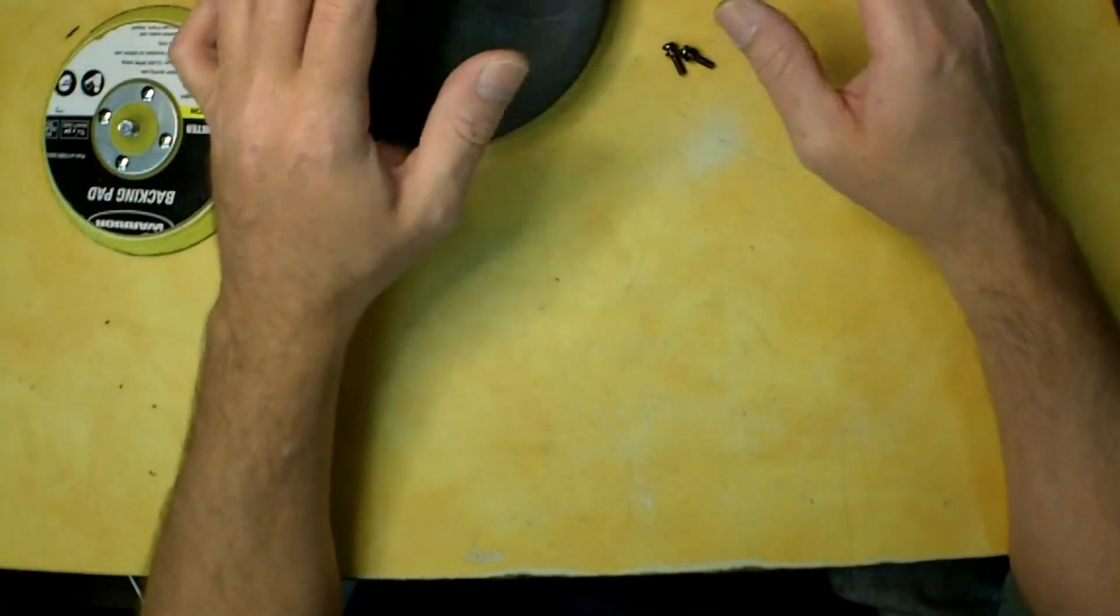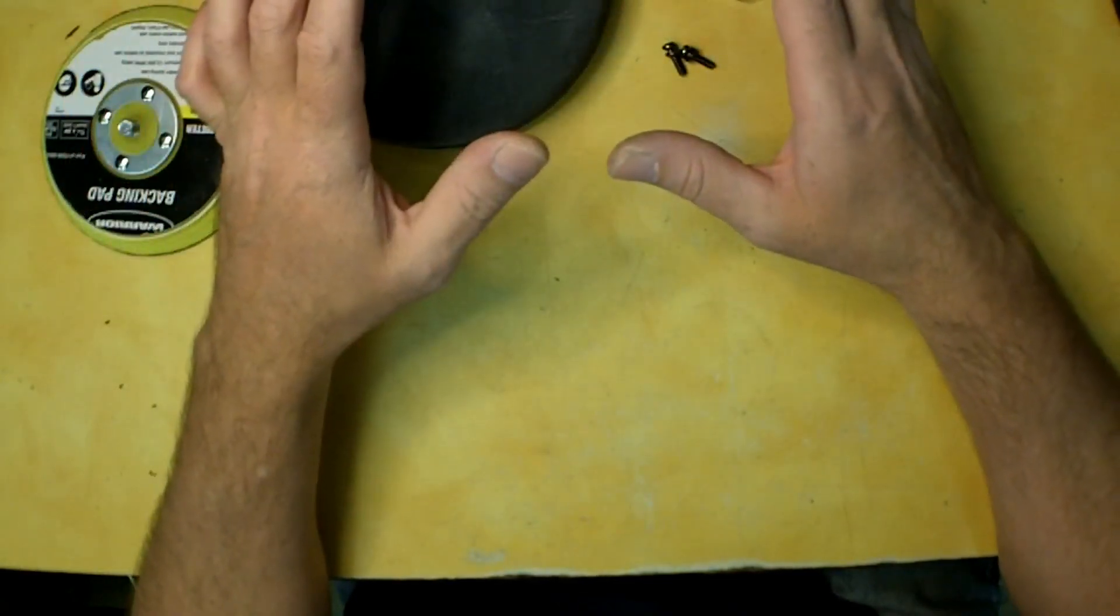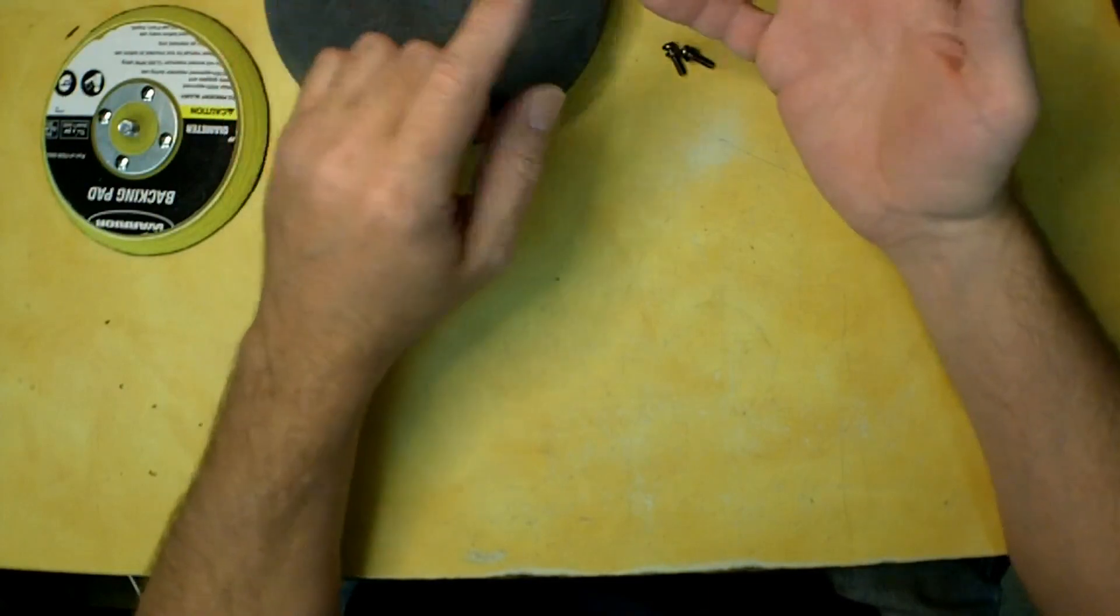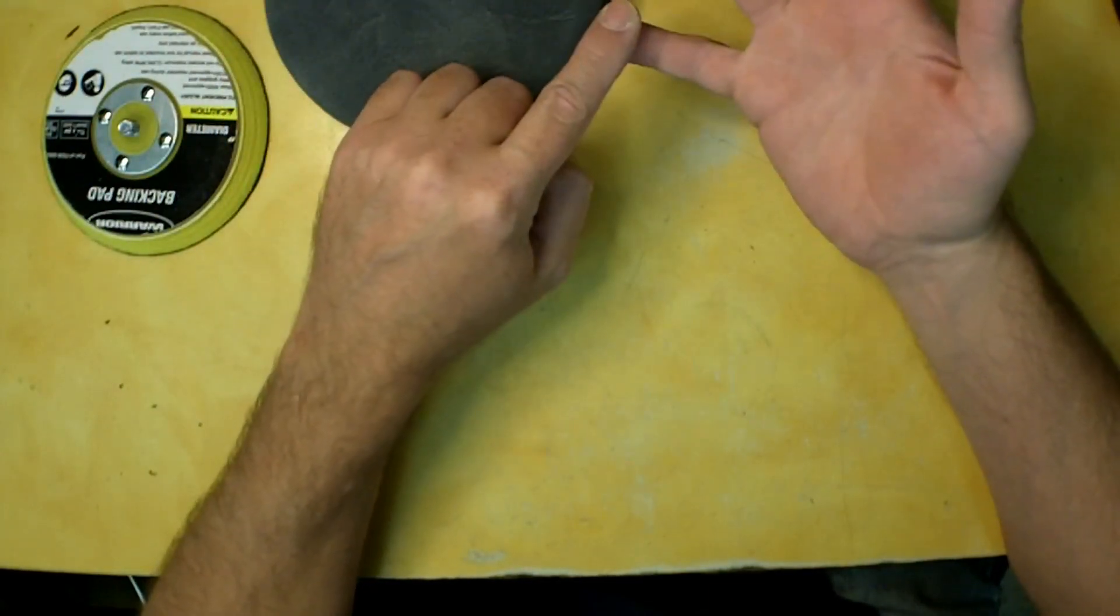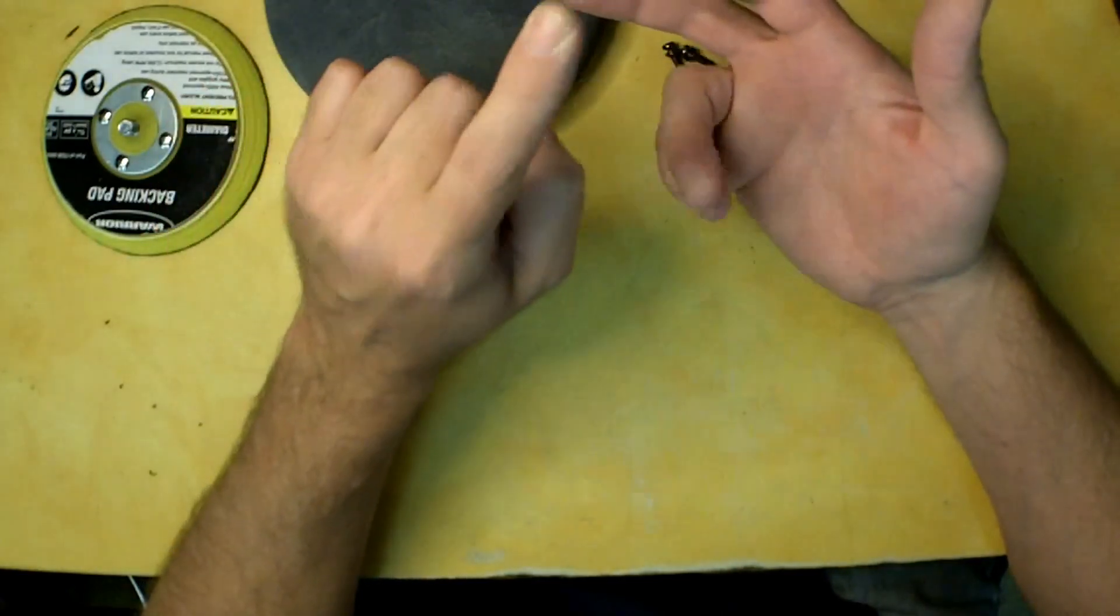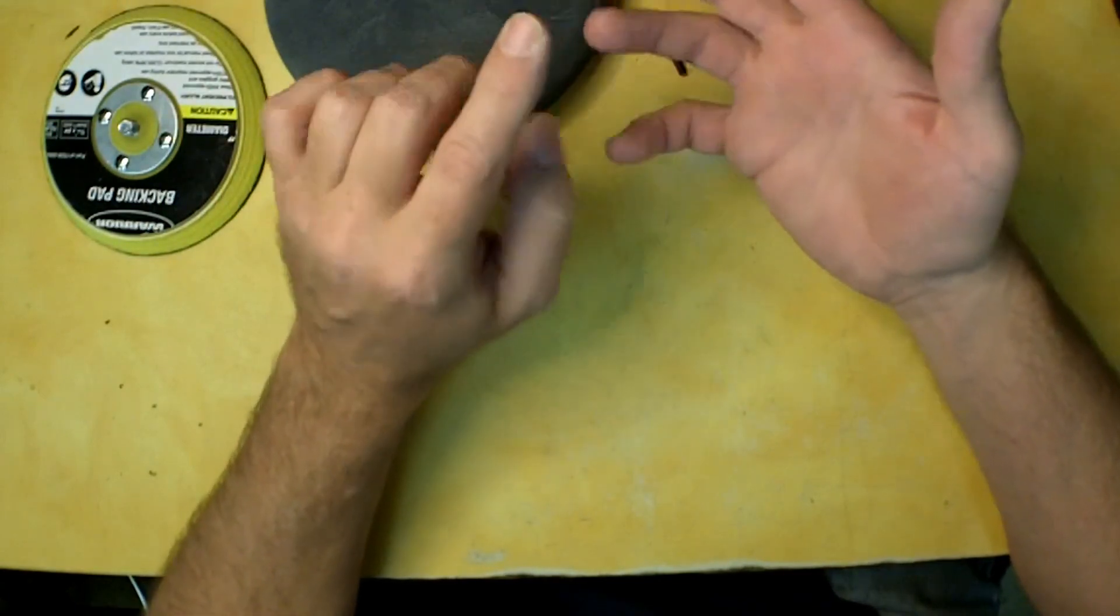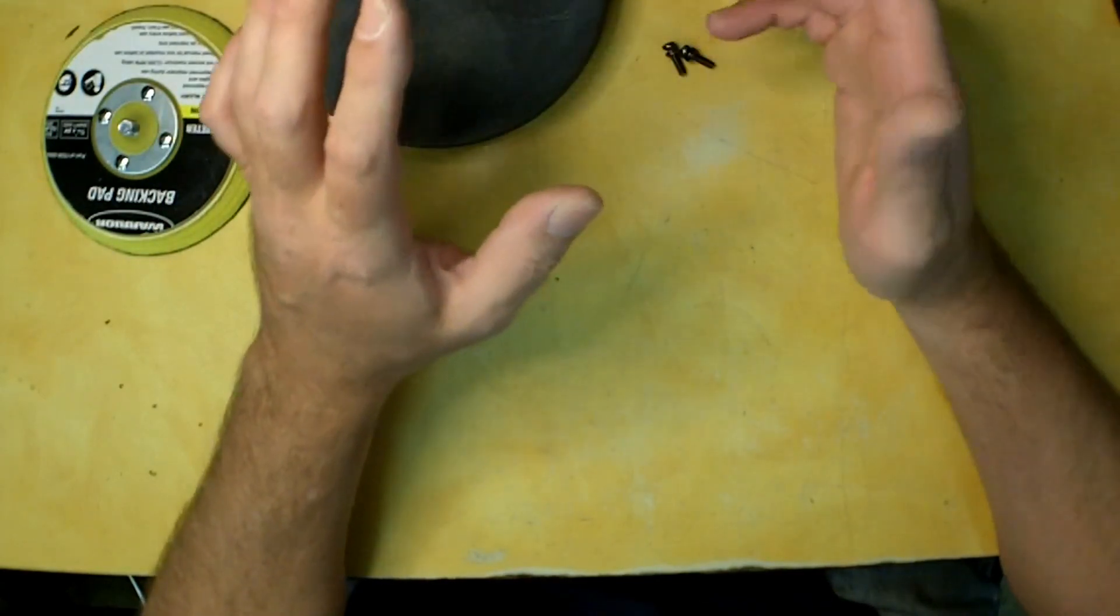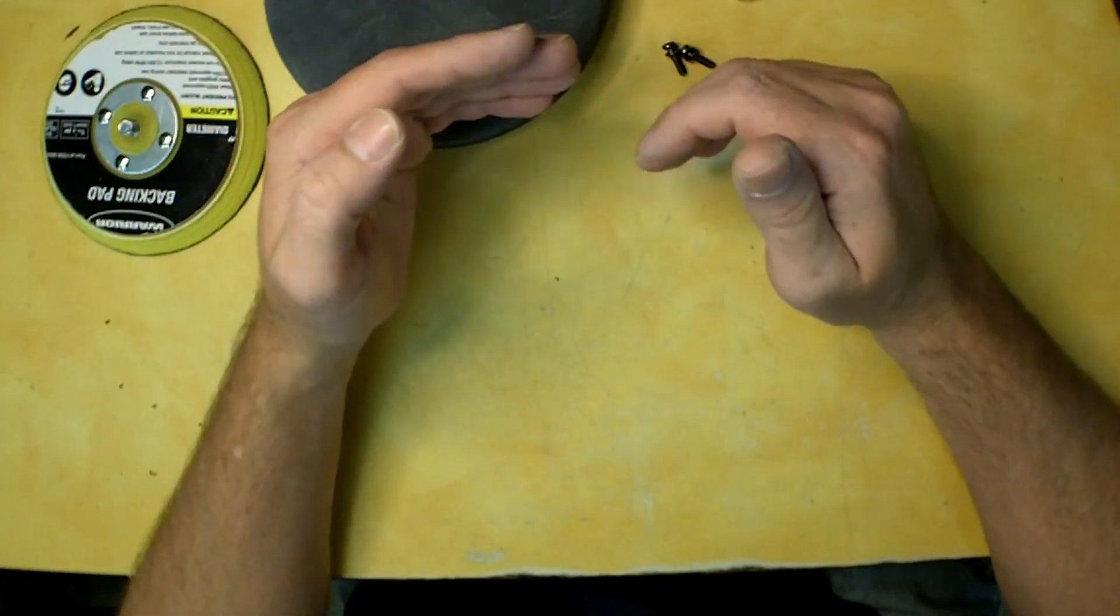But aside from that, that's a lot of surface area, a lot of time that I spent compounding to get all the oxidation off, and then polishing, and then waxing. Those three steps, I hit every square inch of this with each pad.